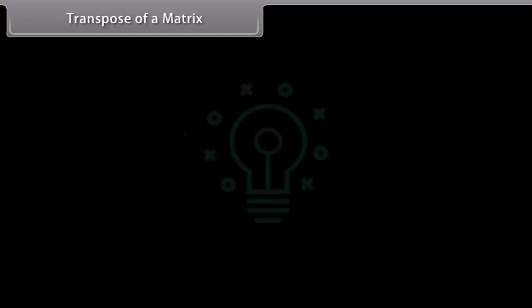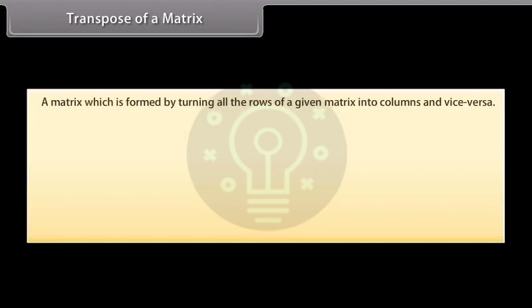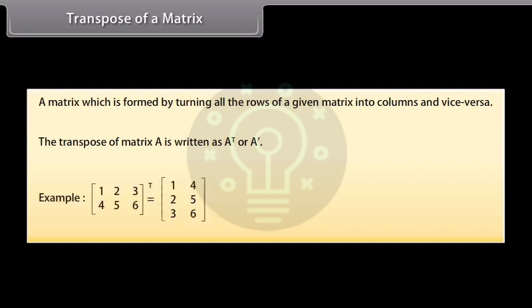The transpose of a matrix is formed by turning all the rows of a given matrix into columns, and vice versa. The transpose of matrix A can be written as A'. For example: